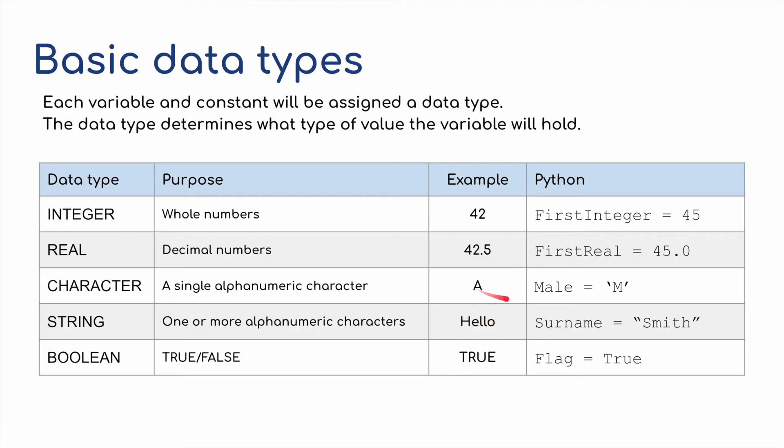We've got characters, which is just basically a single alphanumeric character, a number or a letter, for example, male. String, which is usually a sentence or one word, anything more than one character. And then we've got Boolean, which is just true or false, yes or no. So the flag here is true.